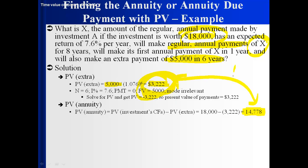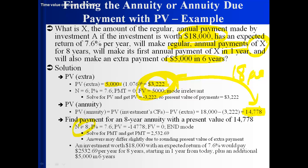The present value of the X payments is $14,778 and the present value of the $5,000 is $3,222, and together they equal $18,000 — the value of the investment. Now we need to find the payment associated with an eight-period annuity, with the first payment in one year, that has a present value of $14,778. The discount rate is 7.6%. What are each of those payments?